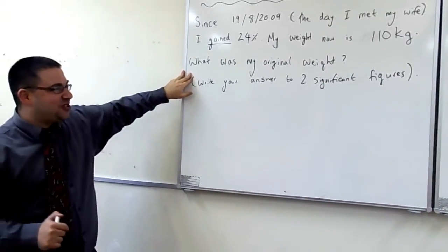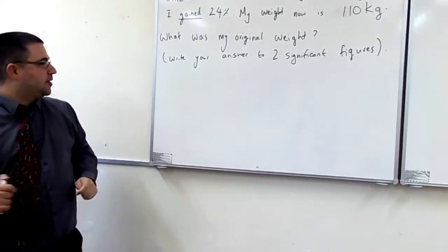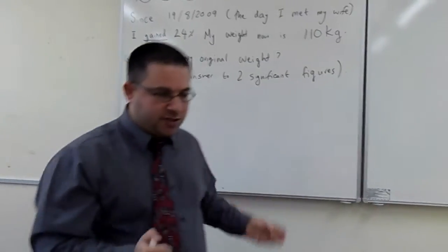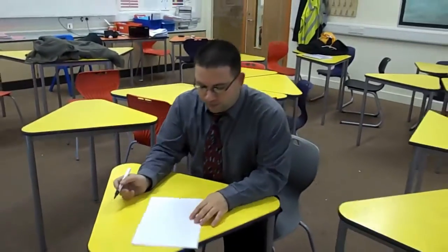What was my original weight? What was my weight on the 19th of August? So this is where I said significant figures — it's quite a lot there. The mistakes I find with these questions is students don't know what to do with the 24% and they can't locate the original weight — what we're trying to do. So my original weight, which is what I'm trying to find — original — is going to be equal to 100%.